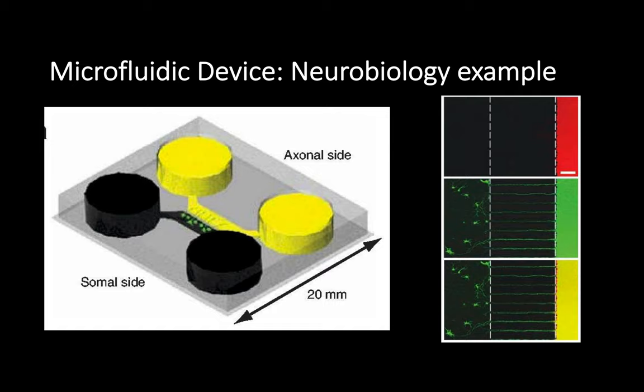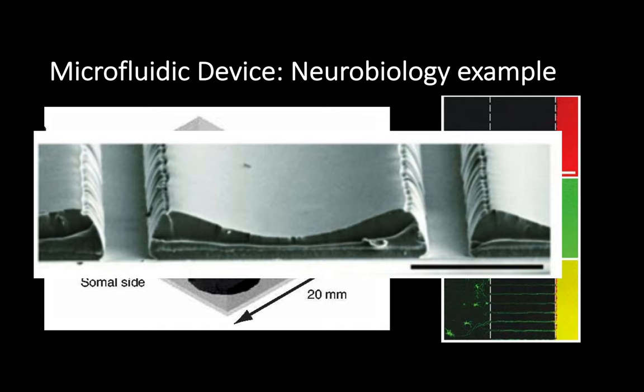What makes these devices special primarily lies in the geometry — the micrometer-sized shapes, grooves, and pillars. Here's one example of an electron microscope image of a microfluidic device.